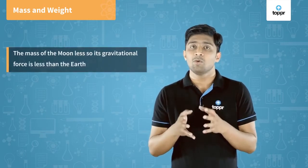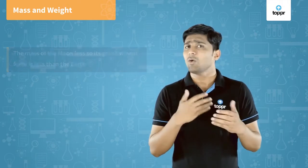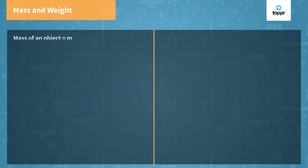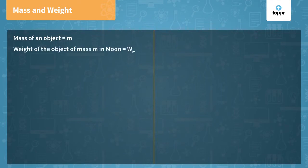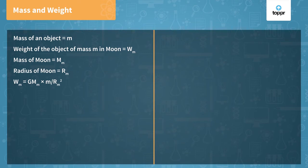It is different because the mass of the moon is lesser than that of earth, and due to this the moon exerts a lesser force. Now let's find out your weight on the moon. Let the mass of an object be m, its weight on the moon be Wm, the mass of the moon be Mm, and its radius be Rm. By applying the universal law of gravitation, the weight of the object on the moon is Wm = G·Mm·m / Rm², where G is the universal gravitational constant, Mm is the mass of the moon, m is the mass of the object, and Rm is the radius of the moon.